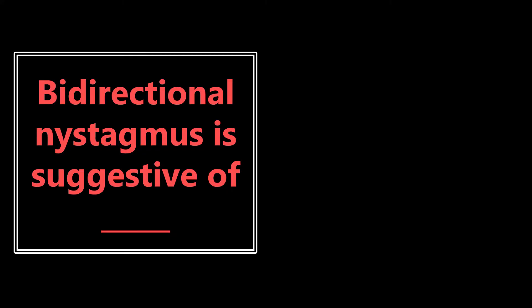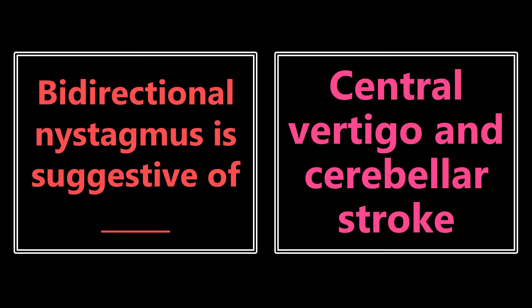Unidirectional nystagmus is suggestive of peripheral vertigo. This is important for the boards but also really important for real life — when patients come in with vague complaints like dizziness, we need to distinguish concerning from less concerning findings. To contrast: bidirectional nystagmus is suggestive of central vertigo and cerebellar stroke. If it's unidirectional, think peripheral cause; if it's bidirectional, think central cause, potentially a cerebellar stroke.